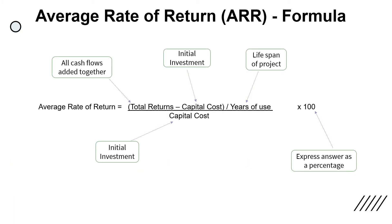The second quantitative method is the Average Rate of Return, ARR. This is the formula given in the IB syllabus. Break it down: ARR equals total returns — that's all the cash flows added together — minus the capital cost (initial investment), divided by the lifespan of the project in years, then divided by your initial investment, and expressed as a percentage.